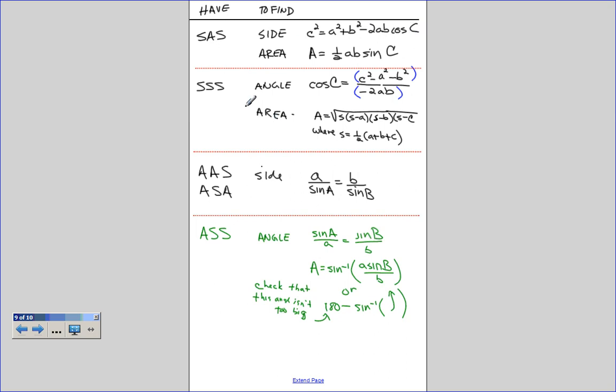If we want to find the area in this side-side-side, we have to use Hero's formula, which is the square root of S times S minus A times S minus B times S minus C, where S is the semi-perimeter. Now if we have angle-angle-side or angle-side-angle, we want to find the side, we just use the law of sines.